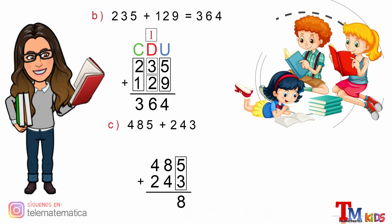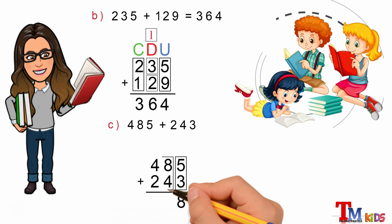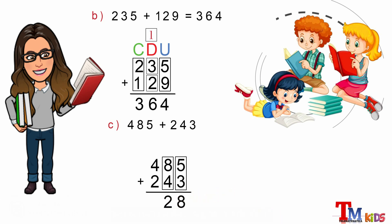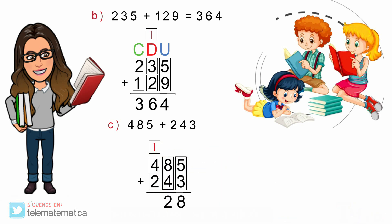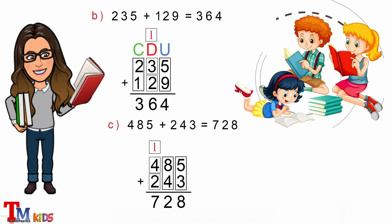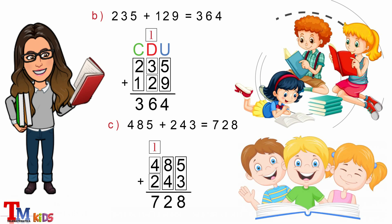En tercer lugar, continuaremos con la columna de las decenas: 8 más 4 son 12. Escribo el 2, llevo 1, y lo escribiremos encima de la columna de las centenas. Y por último, la columna de las centenas: 1 que llevamos más 4 son 5; 5 más 2 son 7. Y este resultado lo escribimos en la operación de 485 más 243.